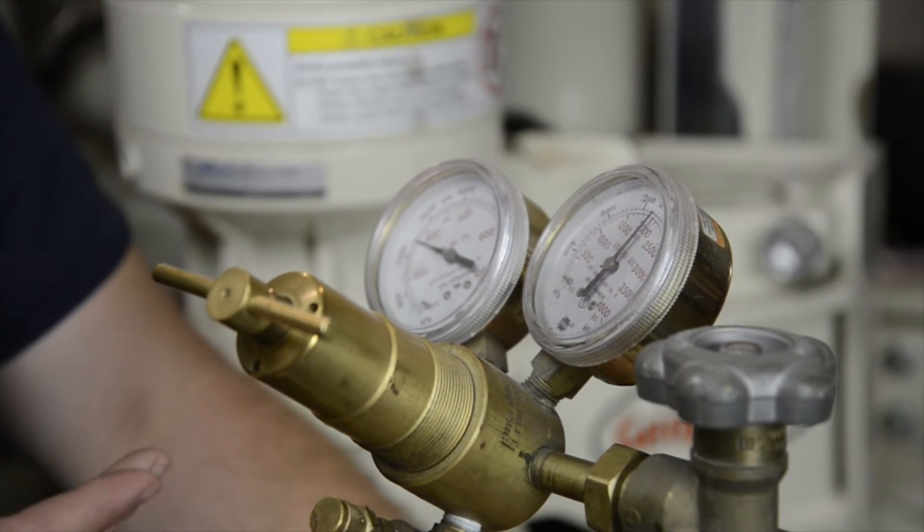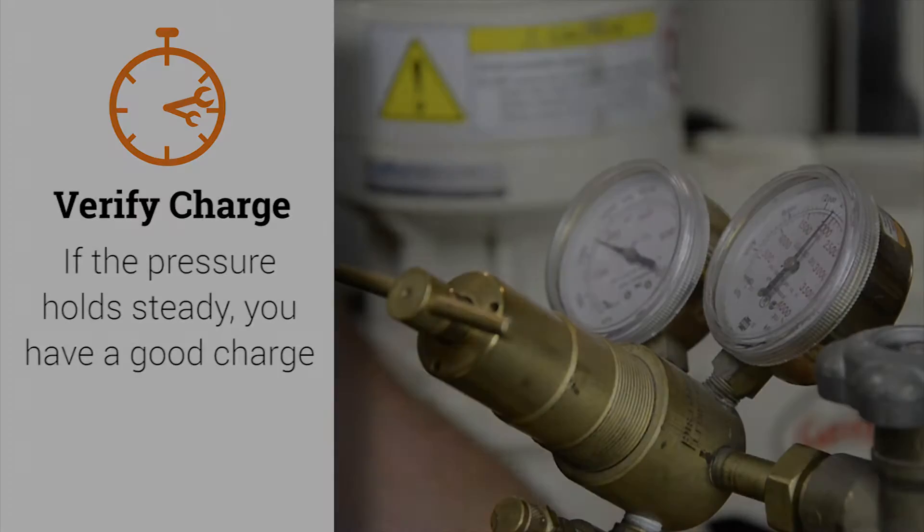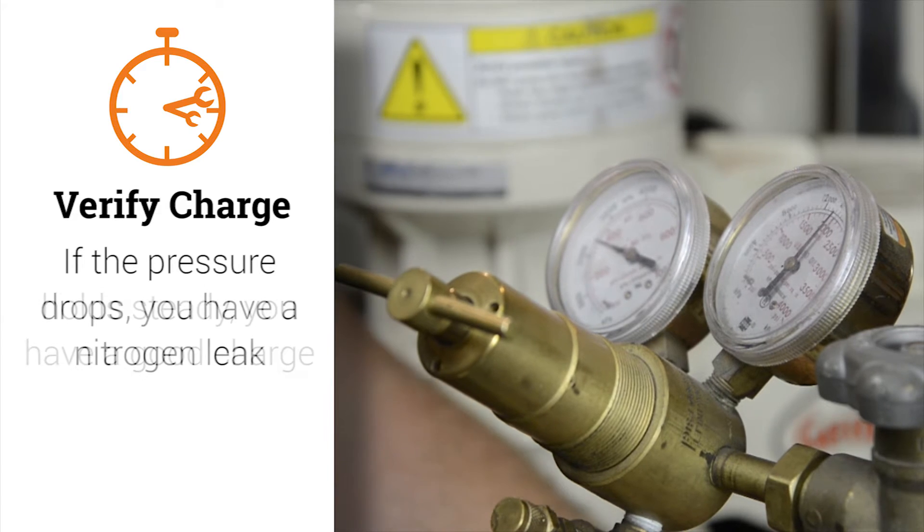Once you have backed the T-handle off, stop and look at the gauge and make sure the pressure is holding steady. If the pressure holds steady, you have a good charge. If the pressure drops, you have a nitrogen leak. I will explain what to do in a moment if this happens.